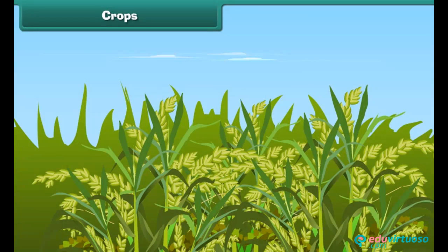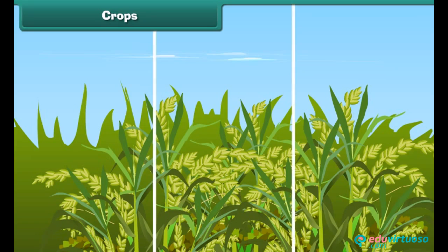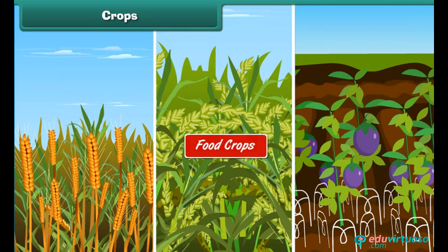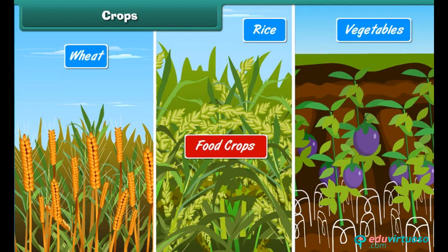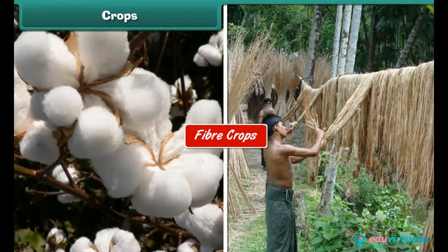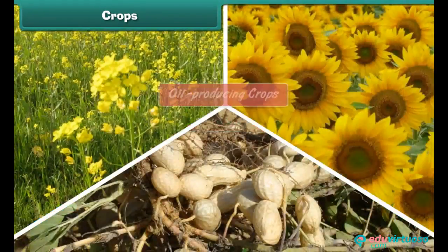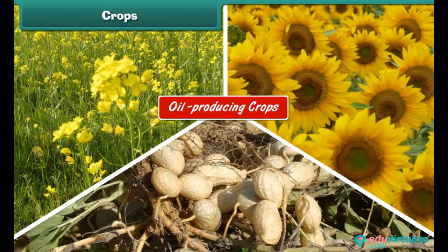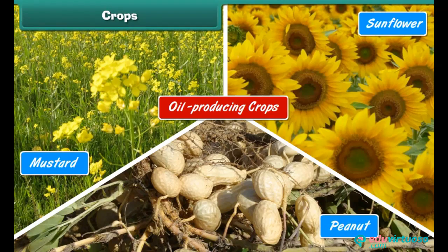Crops: several plants which are grown in fields by farmers and are useful in various ways are known as crops. Crops are mainly of three types: food crops — example, wheat, rice, and vegetables; fiber crops — example, cotton and jute; oil-producing crops — example, mustard, sunflower, and peanut.